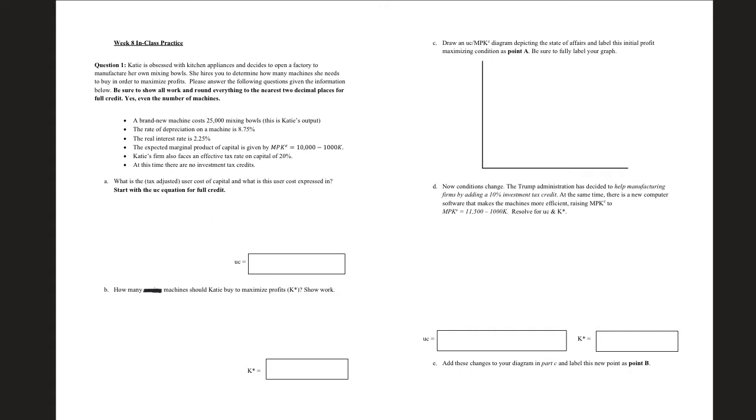So let's go ahead and start off with our notation, the stuff that we have here. This first one, a brand new machine, costs 25,000 mixing bowls. In our class, we are calling this P sub K. That's the real cost of capital. Notice that it's not a dollar sign. So we're saying this is the real cost.